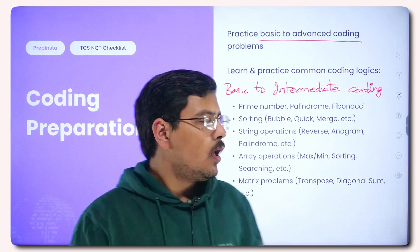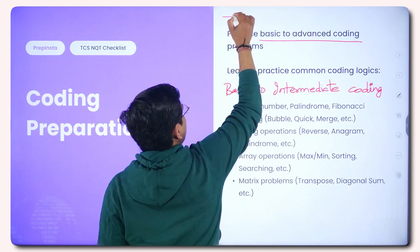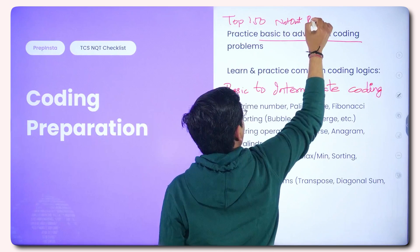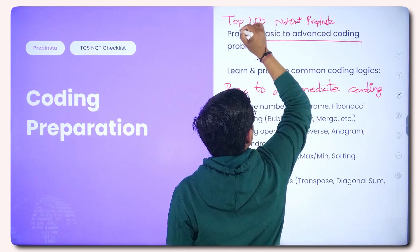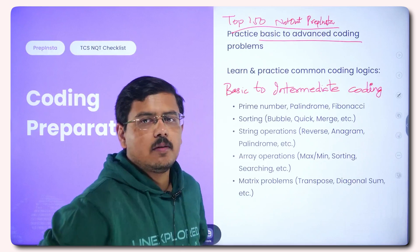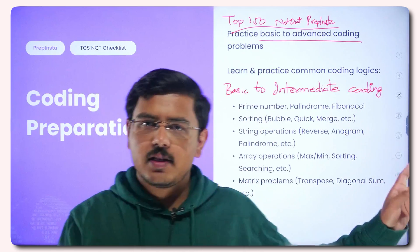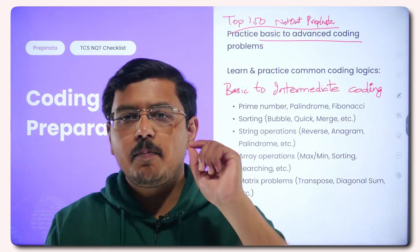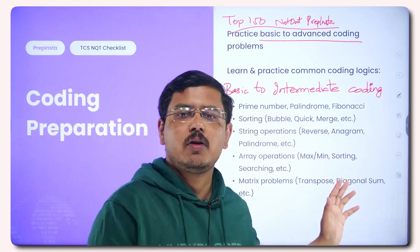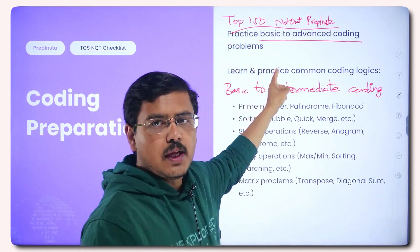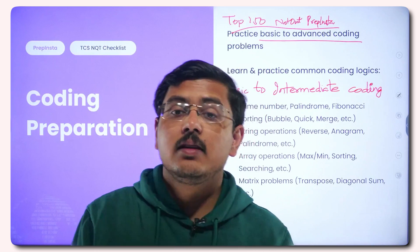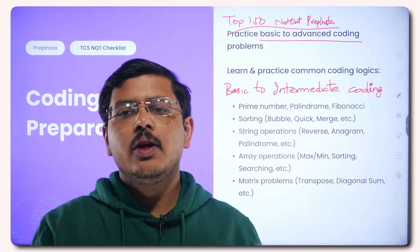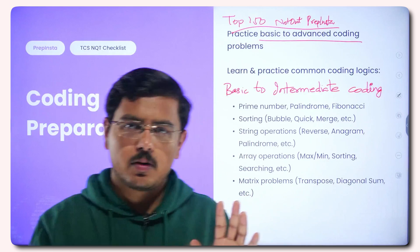For coding practice, I always recommend the top 150 not-out list on PrepInsta. If you know these 150 questions, there is no company in the world you cannot crack — any product-based or service-based company. No need to solve 300 or 400 questions on LeetCode. These are not just 150 questions; these are 150 patterns frequently asked in every interview. New questions are formed out of these 150 patterns, so they are super important.